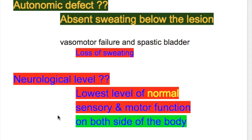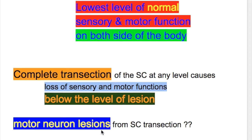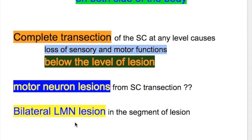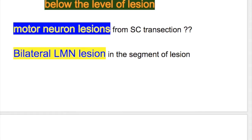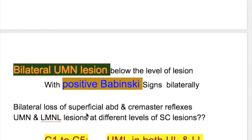What is neurological level? It is the lowest level of normal sensory and motor function on both sides of the body. Complete transection of the spinal cord at any level causes loss of sensory and motor functions below the level of the lesion. This produces bilateral lower motor neuron lesion at the segment of the lesion, and bilateral upper motor neuron lesion below the level of the lesion with a positive Babinski sign, and bilateral loss of superficial abdominal and cremasteric reflexes.